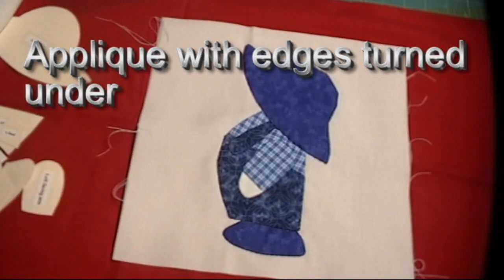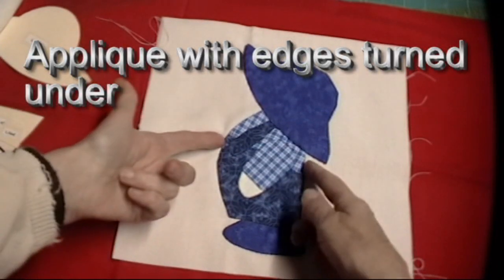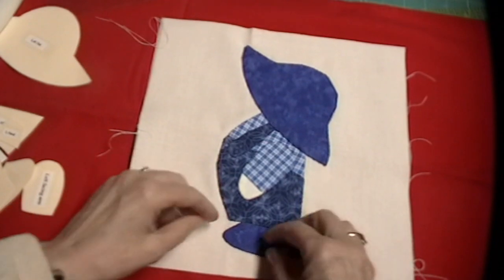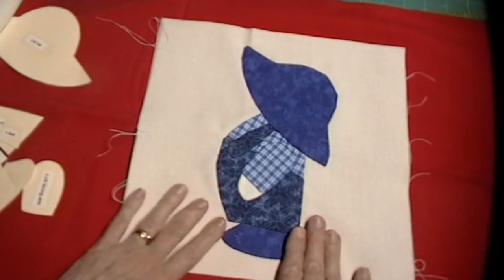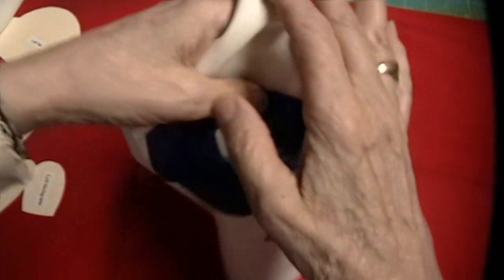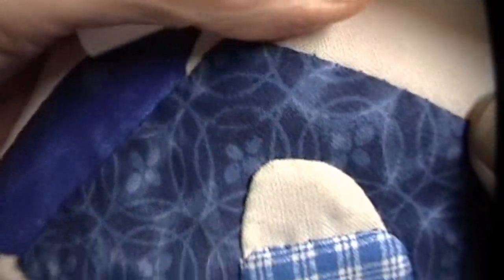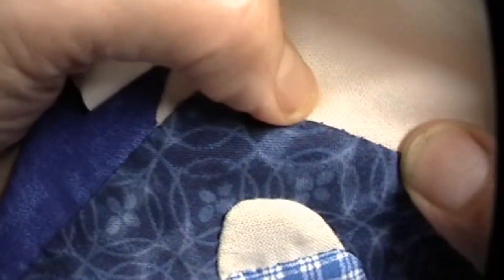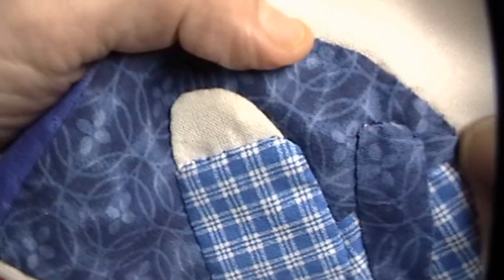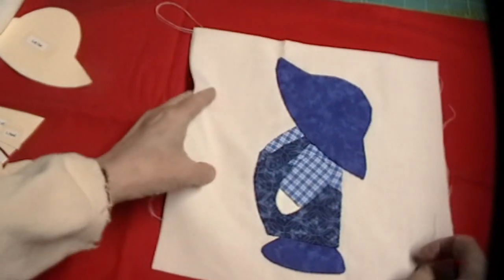Choice number two. You don't like raw edges. You'd rather have your edges turned under, all the way under, and then sew it down. This one is sewn down with hopefully a blind stitch. Mine's not as blind as some people's, but it's supposed to be a hidden stitch that just catches the edge as you sew around. Or you can machine stitch around these, but the edge is turned. This is what you do to do turned edges.